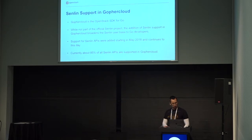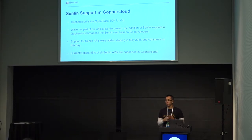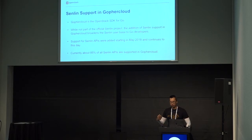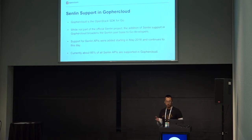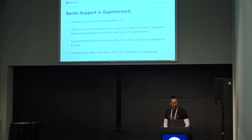Within the last cycle, we had Sendin support added in Go4Cloud. Go4Cloud is the OpenStack SDK for Go, allowing Go developers to query or make operations against OpenStack APIs. While Go4Cloud is not part of the official OpenStack project and the work wasn't done as part of the official Sendin project, the support is very important because we now have a greater user base of potential co-developers. Support was added starting in May 2018, and right now there's about 85% coverage of the Sendin APIs in Go4Cloud.